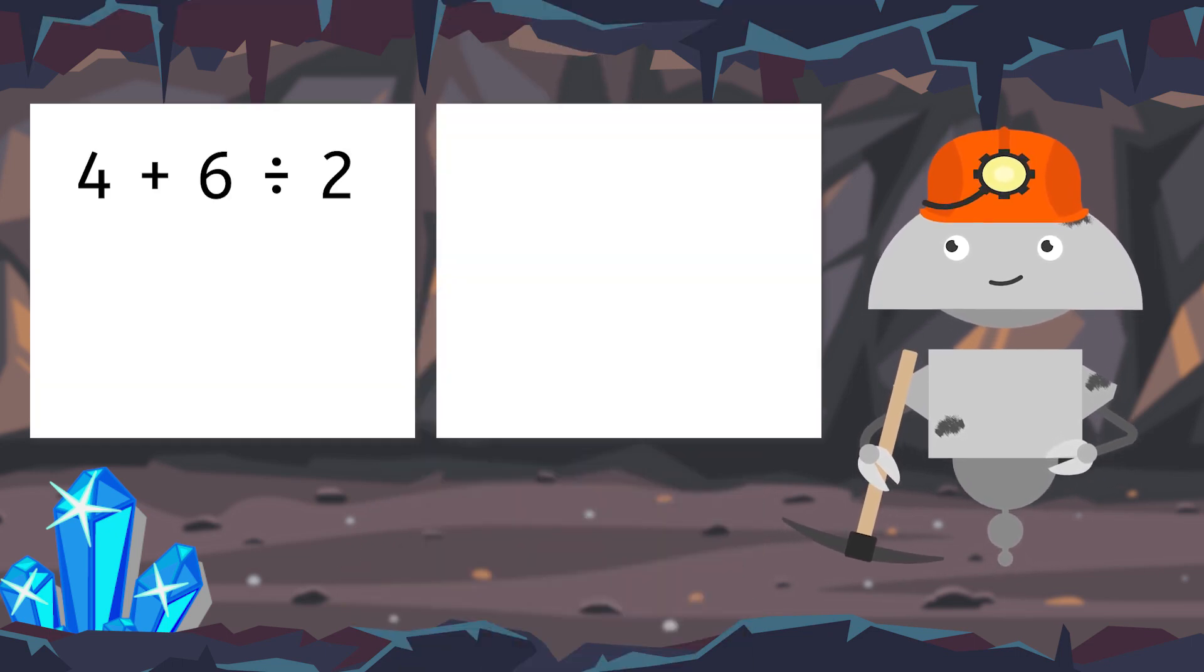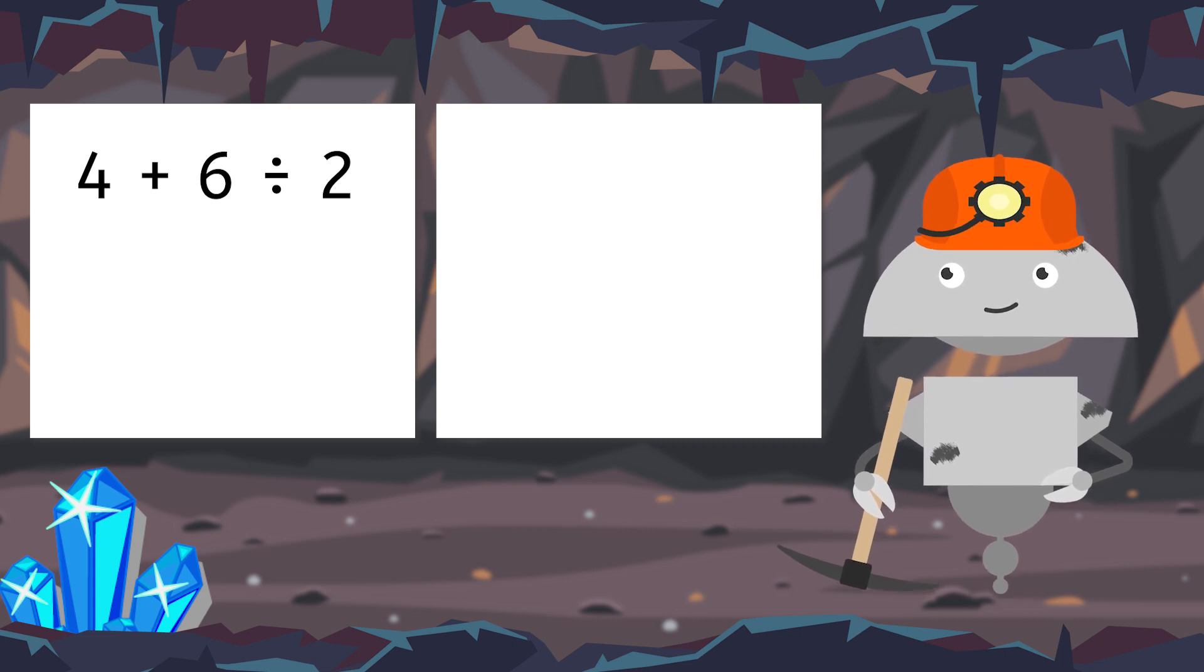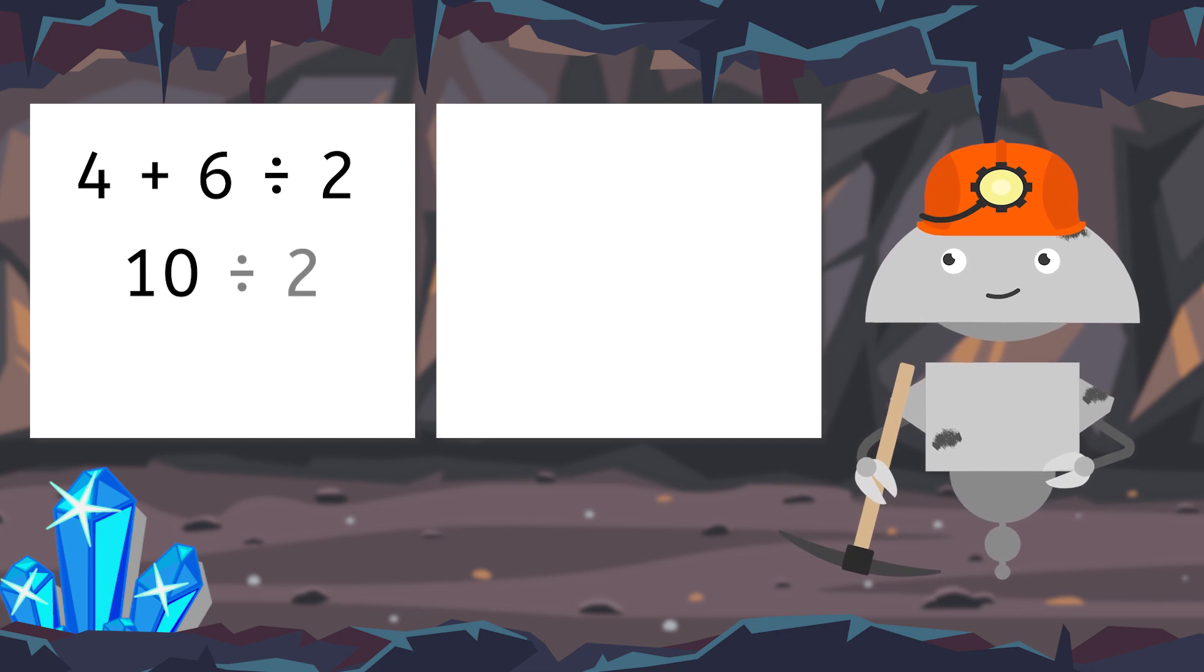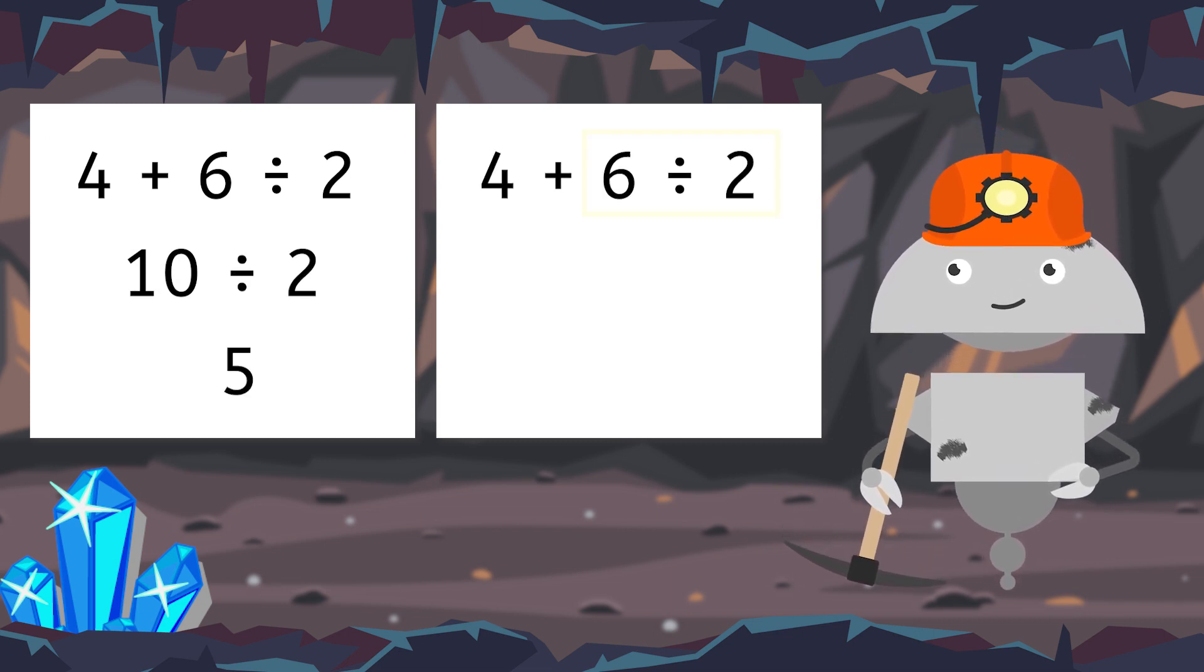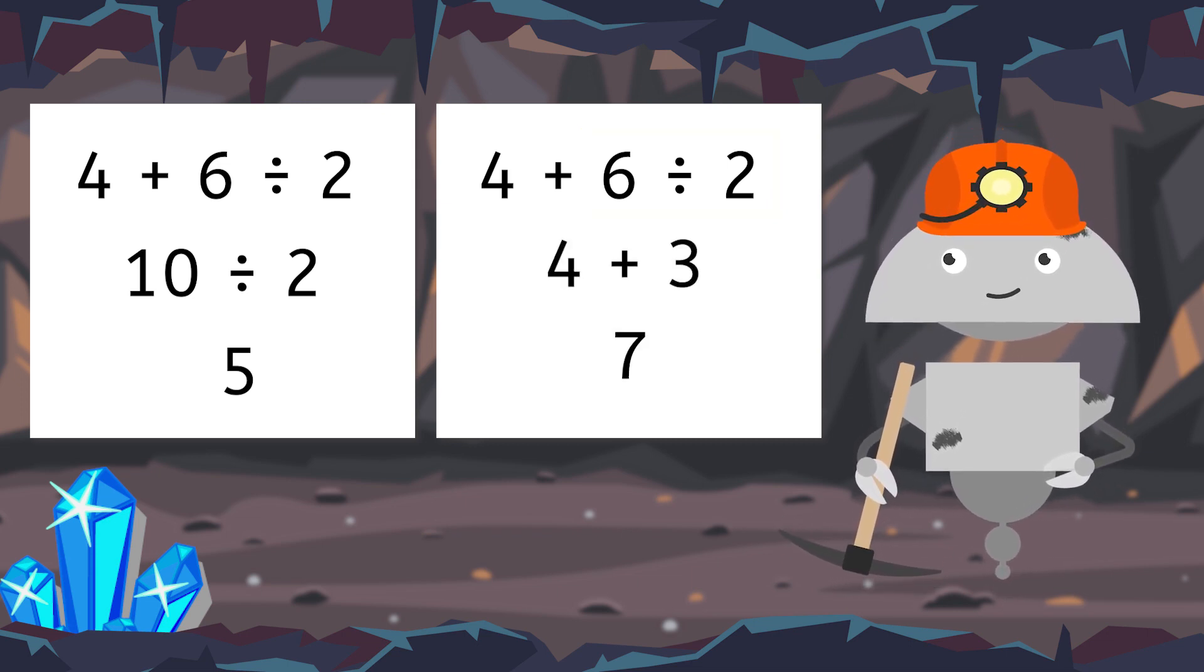This is the problem we're stuck on. 4 plus 6 divided by 2. I started by adding 4 plus 6 to get 10, and then divided it by 2 to get 5. But Mia started with dividing 6 by 2, which equals 3, and then added 4 to get 7. Weird, huh?